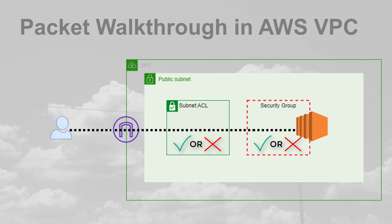However, if accepted, the packet can finally reach the instance. Now that we have a good picture of how things work, let's jump on the AWS console and use VPC flow logs to troubleshoot an issue where I cannot reach one of my instances.